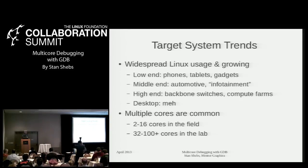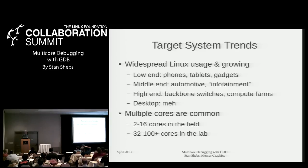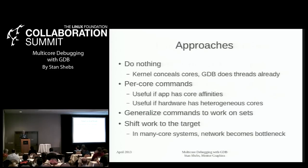Coming down to the multi-core aspect: right now 2 to 16 cores is pretty commonplace. If you look around a room of laptops you'll see anywhere from 2 to 8, and desktops have more. In the lab, with companies like Activa and Tilera, there are quite a few higher numbers of cores being experimented with — there are even some thousand-core systems, though some cheat by being hyper-threaded for a thousand threads rather than having that many physical cores. This has implications for debugging because you have a lot more stuff going on simultaneously in the target.